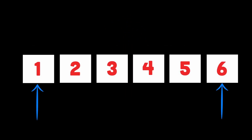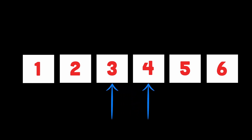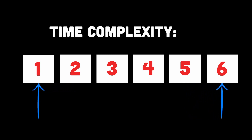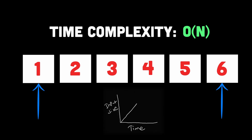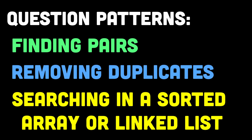The first one is the two-pointer approach. The two-pointer approach involves using two pointers that traverse an array or a linked list simultaneously, often starting from different positions or moving at different speeds. This approach is particularly useful when dealing with problems that require comparisons or operations between different elements of the data structure. It often allows you to solve problems with a time complexity of O(N), and can be used to solve patterns including finding pairs, removing duplicates, or searching a sorted array or linked list.